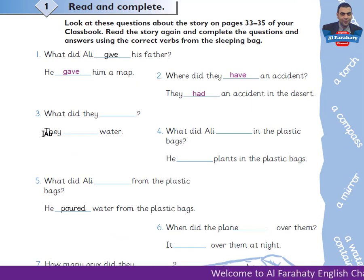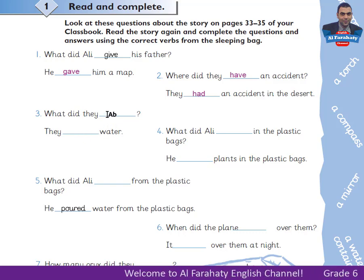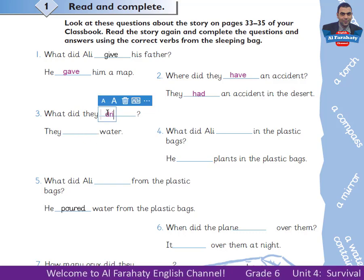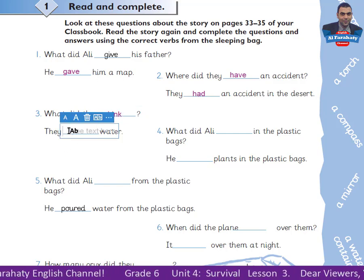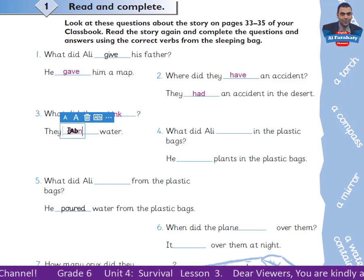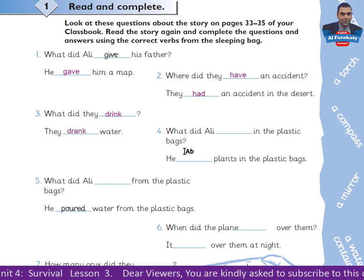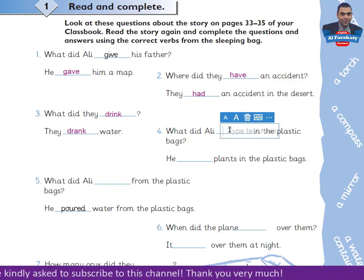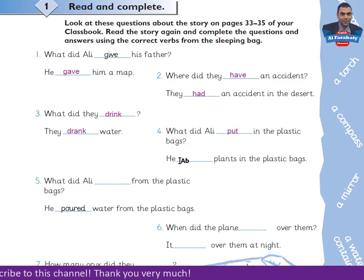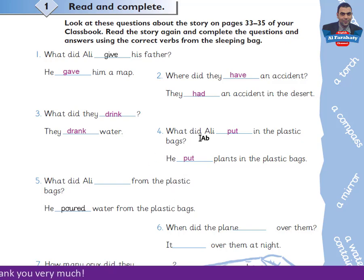Number 3: What did they drink? They drank water — 'drank' is the simple past of 'drink'. Number 4: What did Ali put in the plastic bags? He put plants in the plastic bags. Note that 'put' is both the present and simple past form of 'put'.